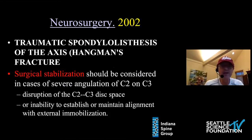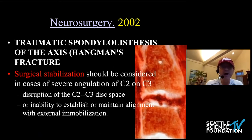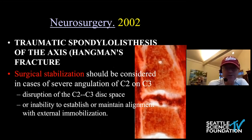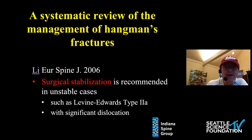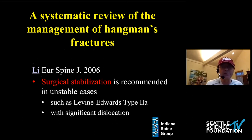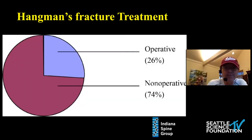Many reviews have shown, especially with disruption of the C2-C3 disc space and the significant instability because of this, that operative stabilization should be considered. There are many studies that have shown that surgical stabilization in these unstable type 2 Hangman's fractures is associated with good outcomes.